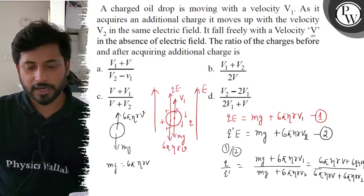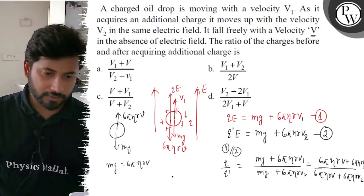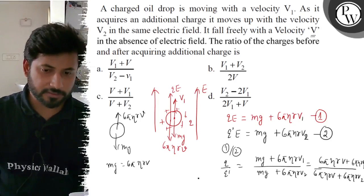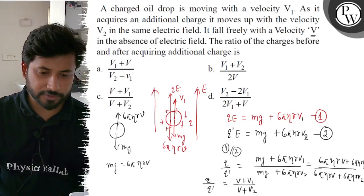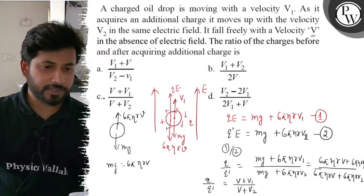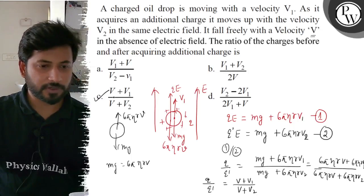If we take 6πηR common, the final answer is Q divided by Q' equals V plus V1 divided by V plus V2. So the final answer is V plus V1 divided by V plus V2, option number C.